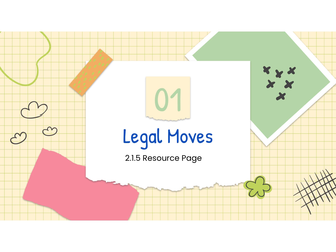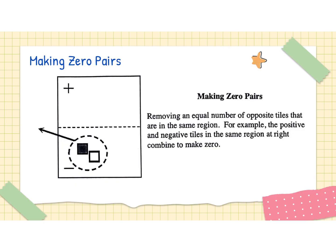We will start with the first of the two sheets I asked you to download: the resource page for legal moves. Last week we talked about making zero pairs. Zero pairs are when you have two tiles that have the opposite and exact value in the same region of your mat. The information on the side clearly shows two unit tiles — a plus one and a minus one — and together those two tiles equal the value of zero.